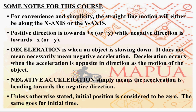Unless otherwise stated, initial position is considered to be zero. x₀ is considered to be zero. That's why in many cases x is synonymous with delta x, because delta x equals x minus x₀, and if x₀ is zero, displacement is just equal to x. The same goes for initial time — unless otherwise stated by the problem, consider the initial position and initial time of the object to be equal to zero.